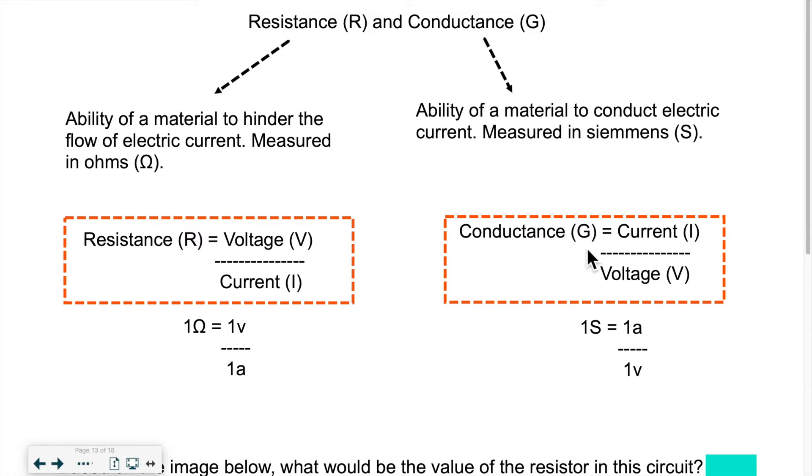So conductance, capital G, is equal to current I over voltage V. So you can see that this fraction or this ratio is the opposite of this ratio. And it makes sense because resistance and conductance are opposite to each other. If we look at the units, conductance measured in Siemens is equal to current one amp over one V voltage. We will not really use this. We will calculate things based on resistance. But it's good to know the distinction between the two because they really go hand in hand.